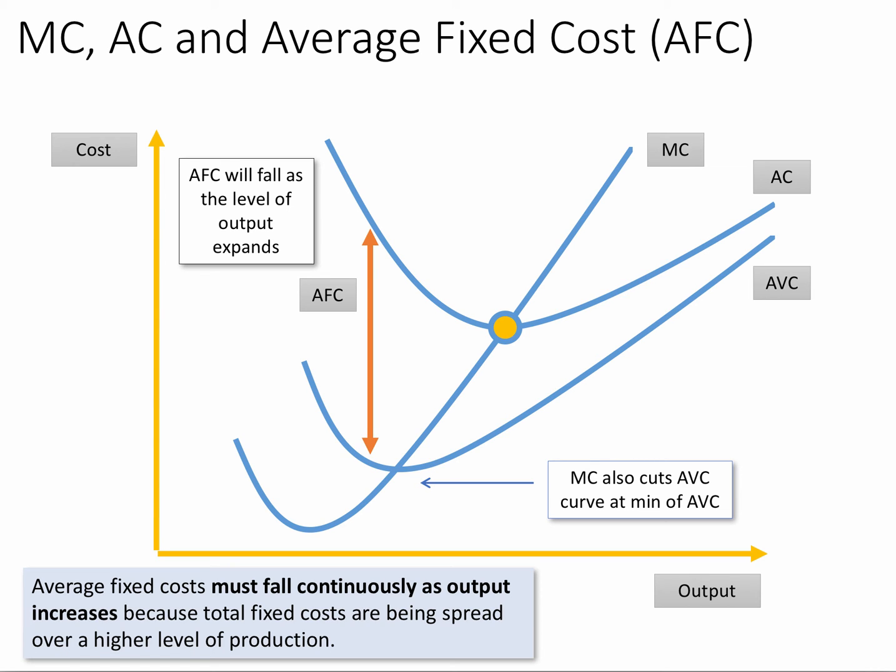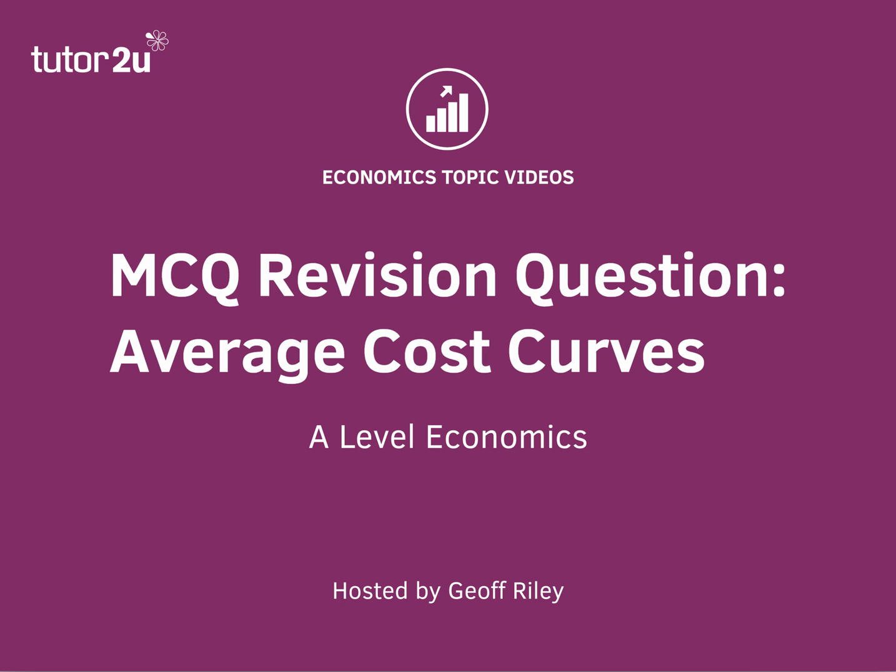in the short term, because total fixed costs are constant. As you produce more goods or services, those total fixed costs are spread over a higher level of production, therefore reducing the average fixed cost. So that gap between AC and AVC will get smaller, and that's why that's the answer to this question.